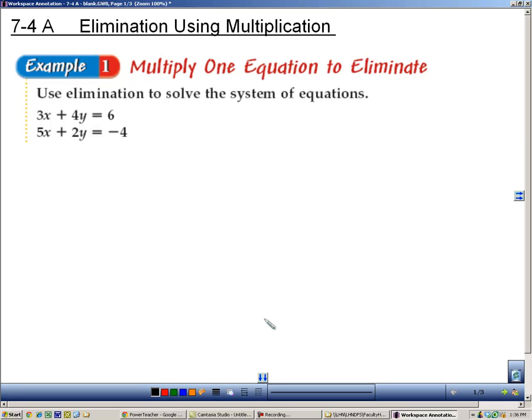Section 7.4a is about elimination, but now we're going to use multiplication. If you look at these two equations, this system, none of the coefficients are such that you can add or subtract. If you add 3 and 5, you get 8. If you add 4 and 2, you get 6. So you're not going to be able to eliminate anything.